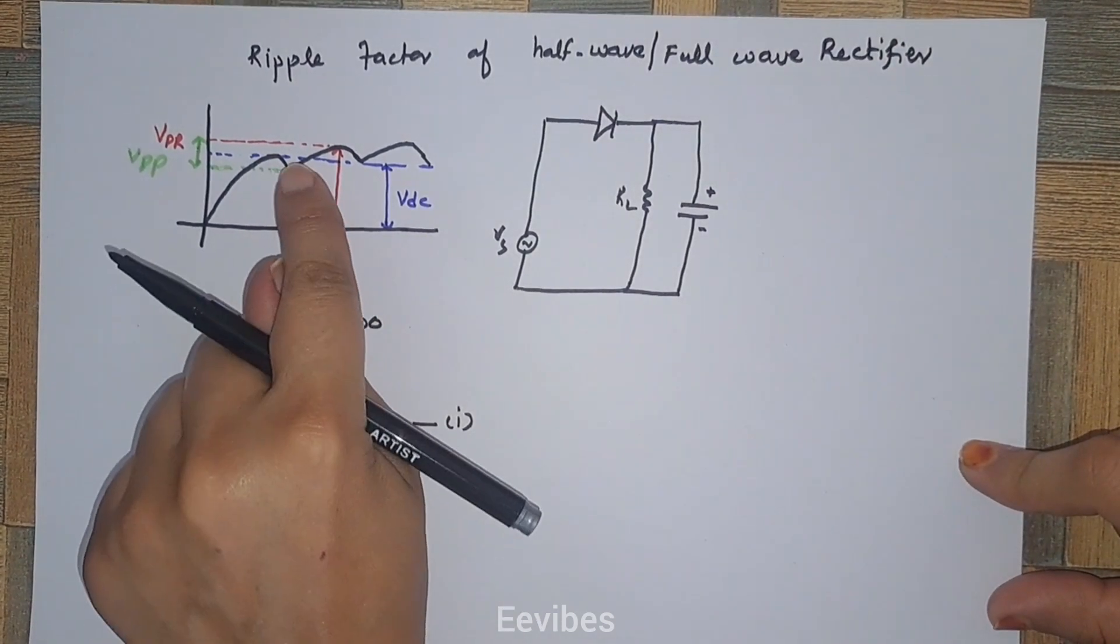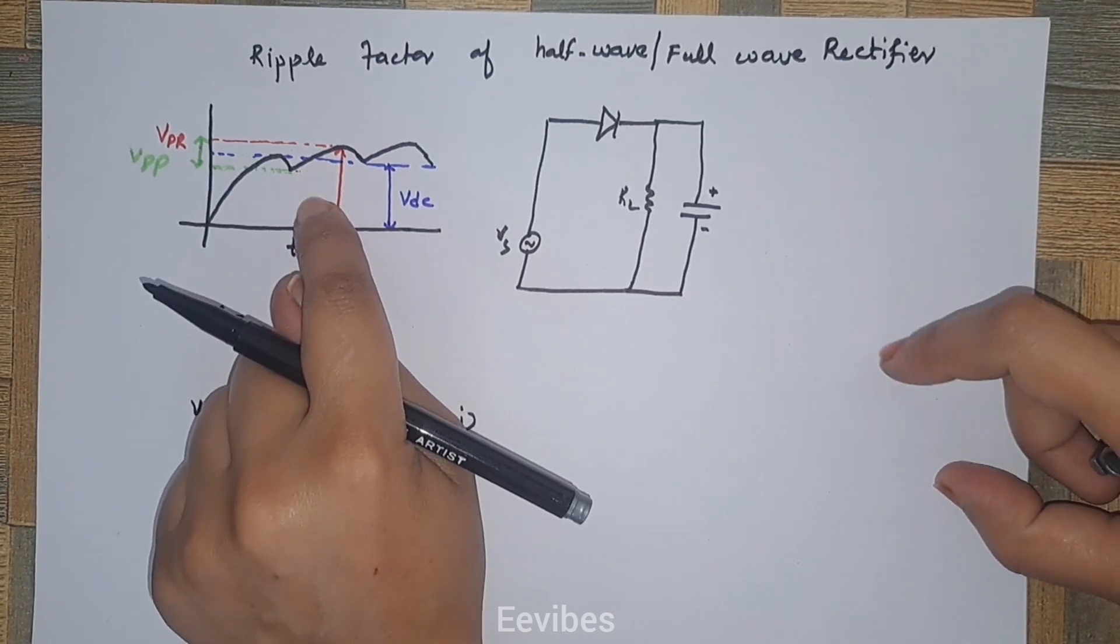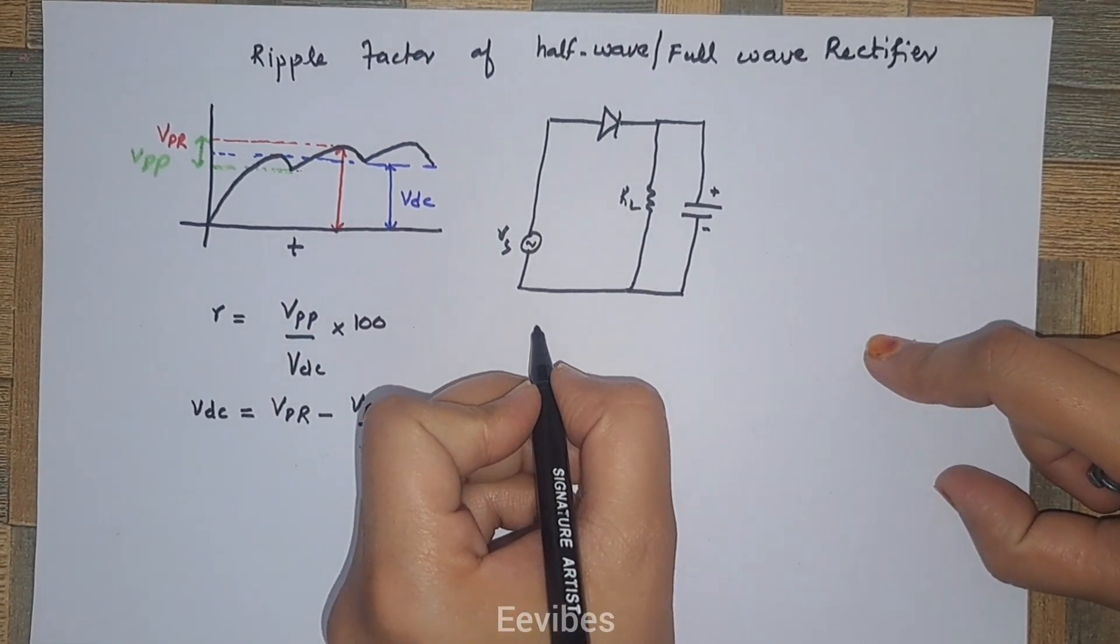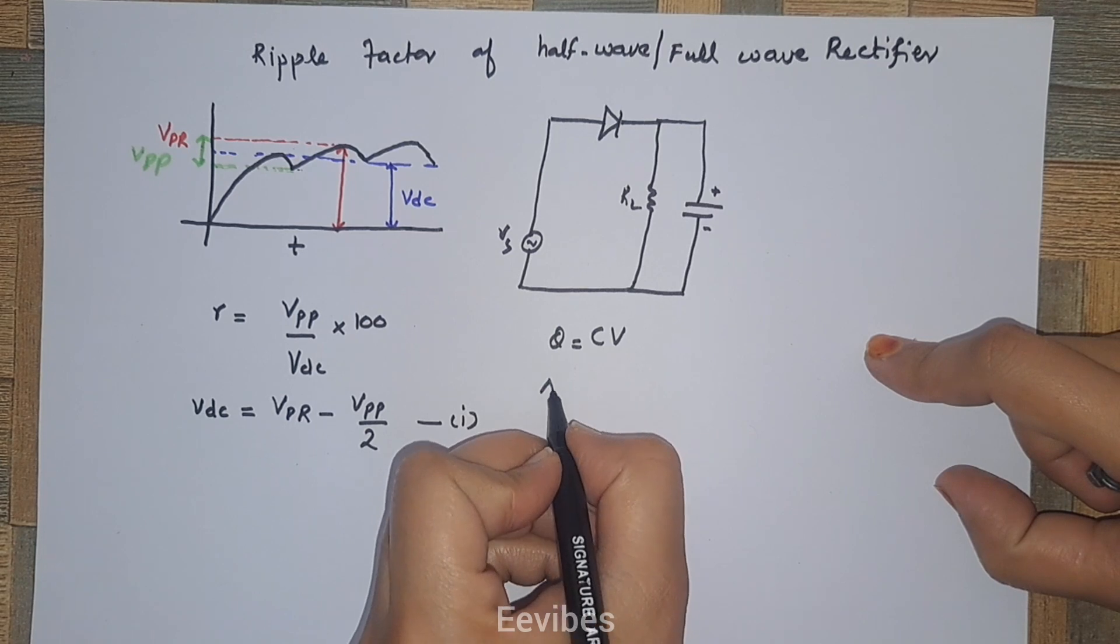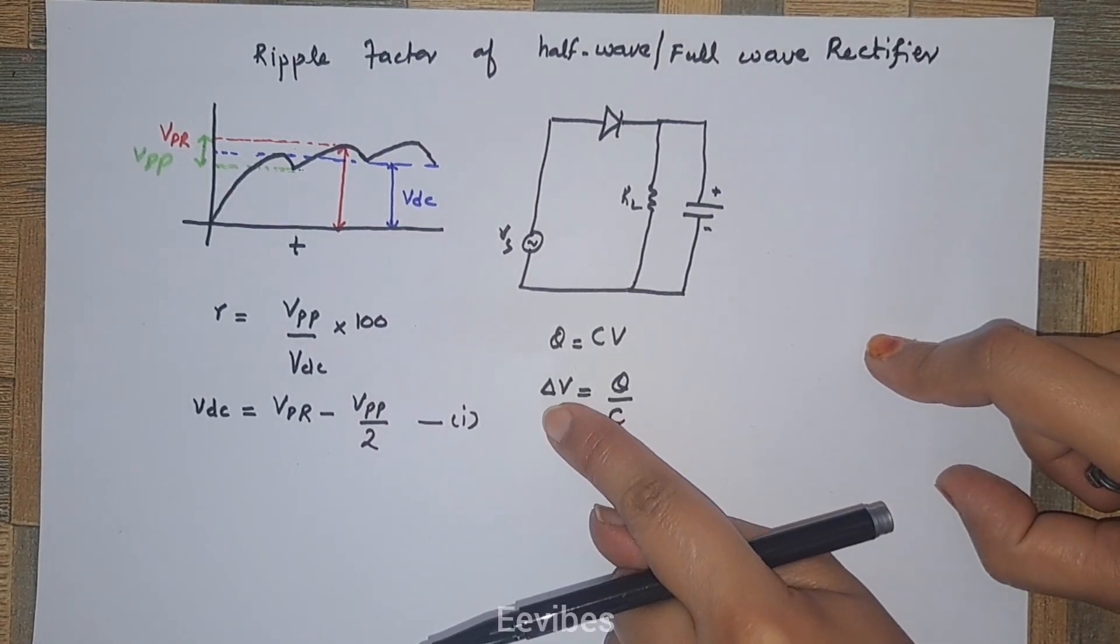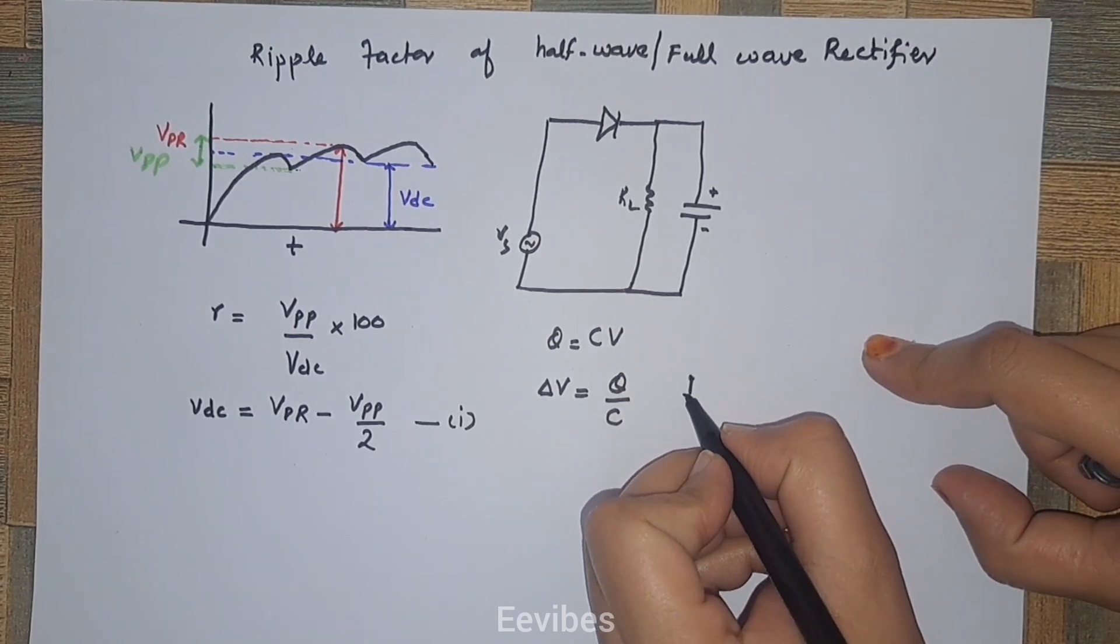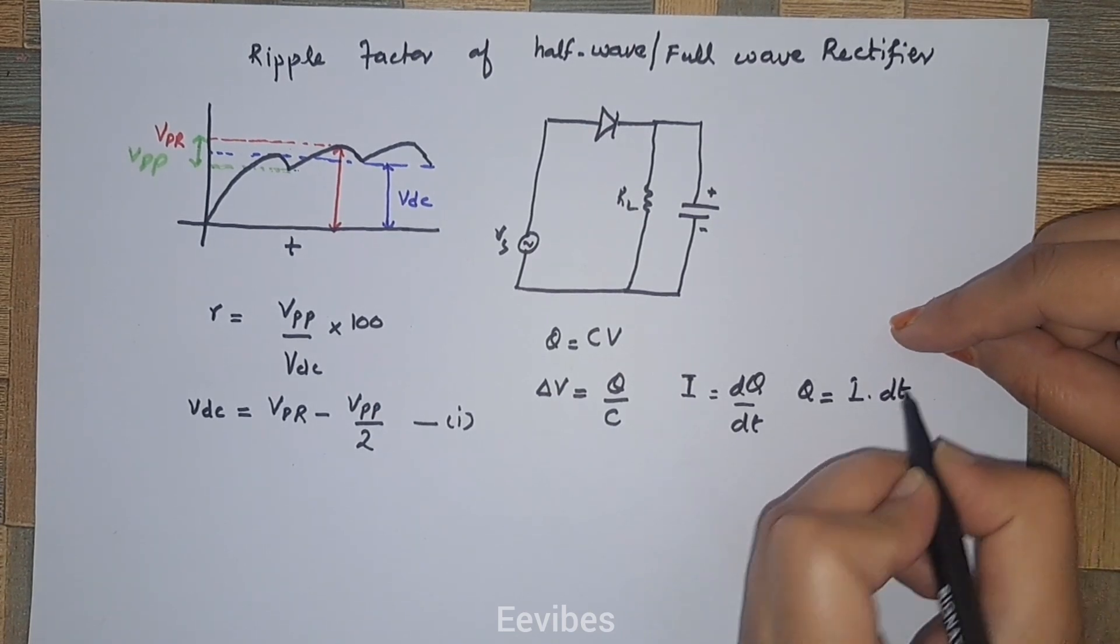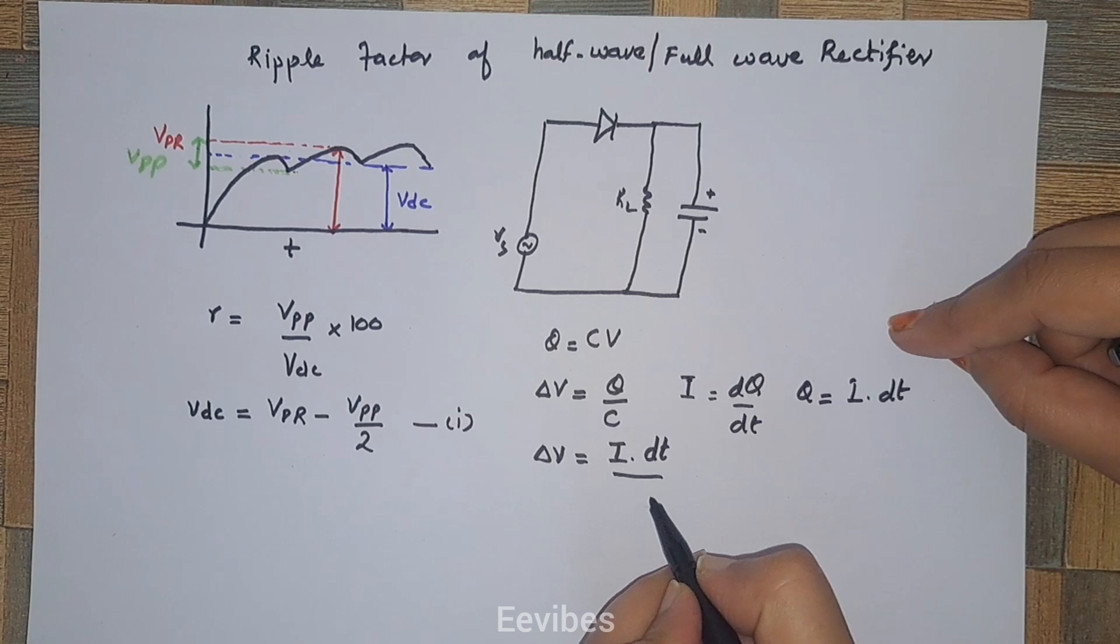When the peak-to-peak value of the output ripple voltage is small compared to VDC, which is usually true, we can assume that the load current is essentially constant and will discharge the capacitor linearly according to the basic equation Q equals CV. From here we can write change in capacitor voltage equals Q over C. The charge will be changing according to the equation I equals dQ/dt, or simply Q equals I times dt.